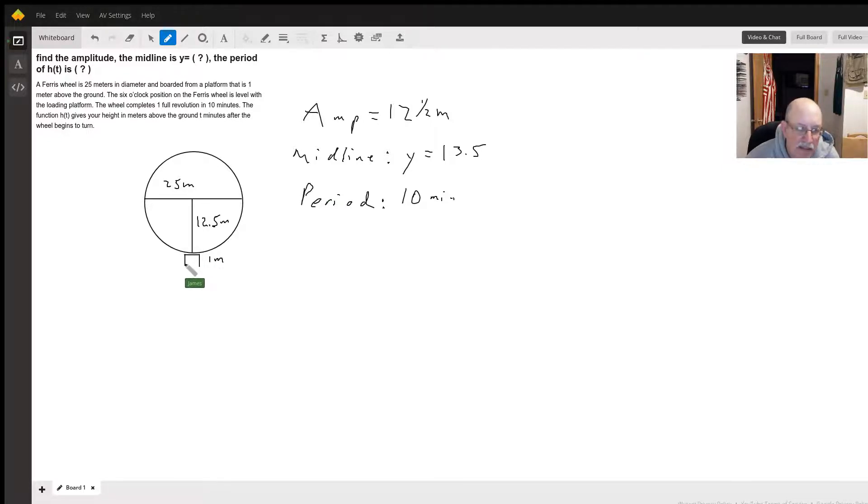Since the loading platform is one meter above the ground and then the Ferris wheel is above that, that means our midline is going to be at Y equals 13.5 meters. It's the one plus 12.5.